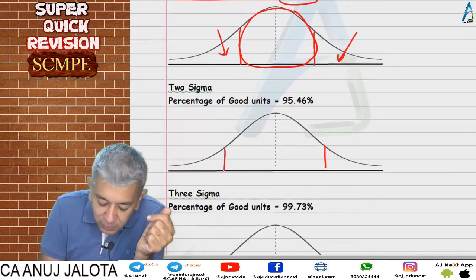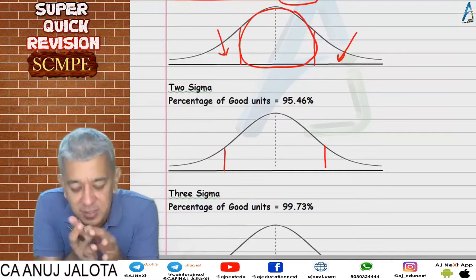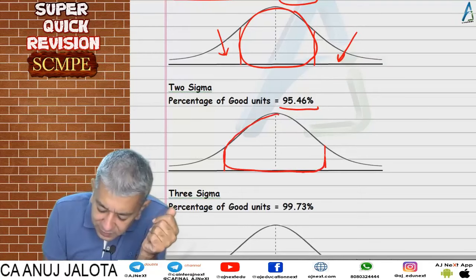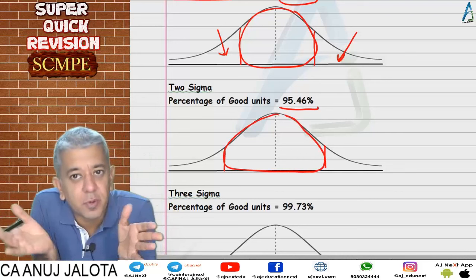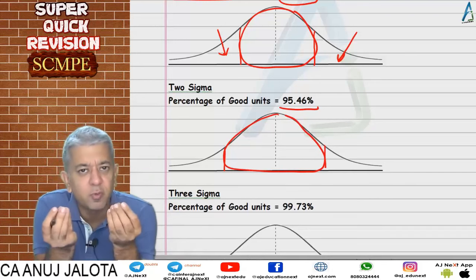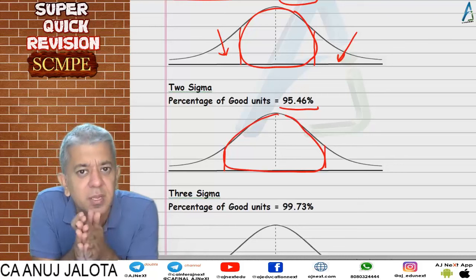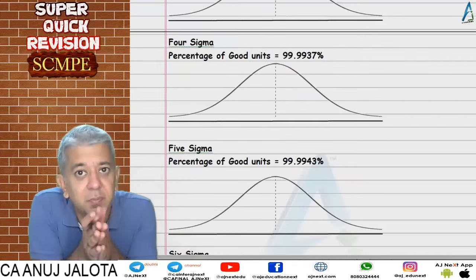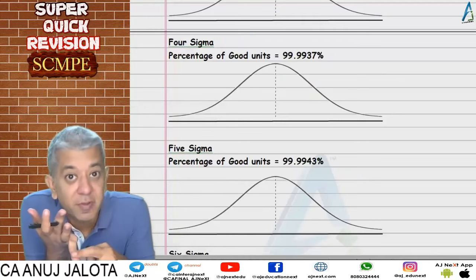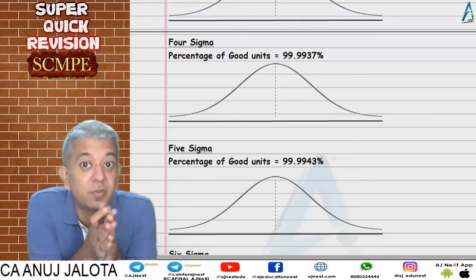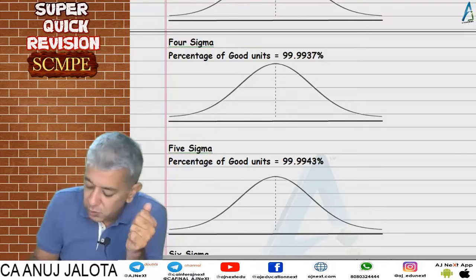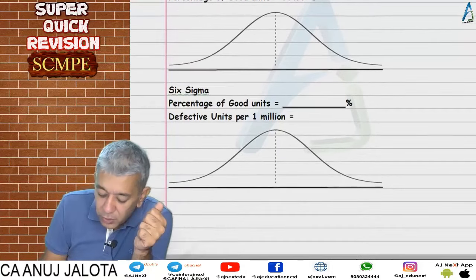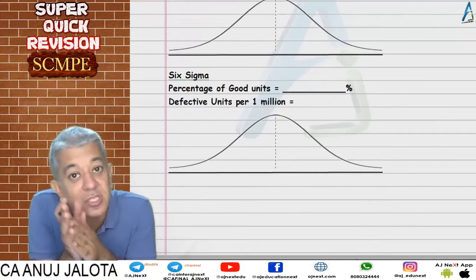With each sigma, the normal distribution curve improves and defectives keep becoming fewer. At two sigma, the good units reach 95.46% — that area is covered, and only about 4.54% are defective units. Defective units mean either manufacturing is poor or customers are not satisfied with the goods. With each sigma, success increases and the number of good units increases until we reach six sigma.